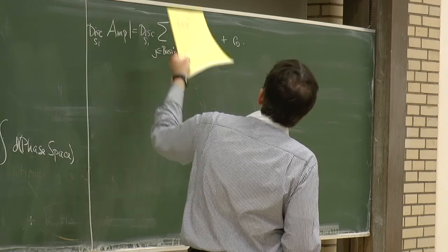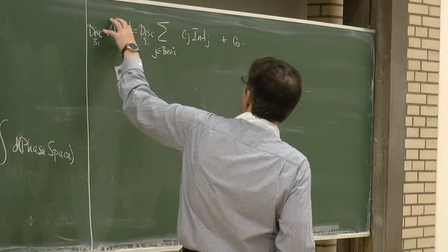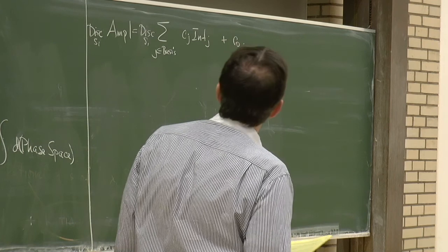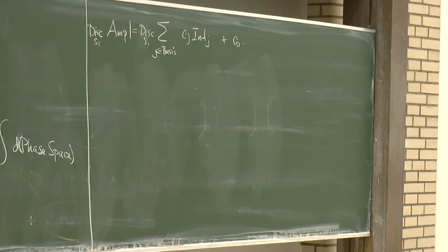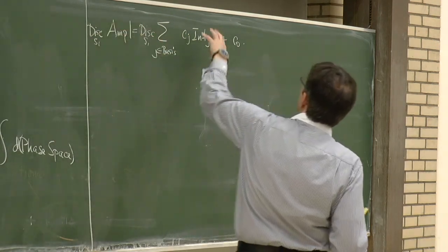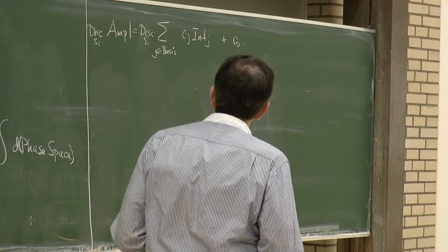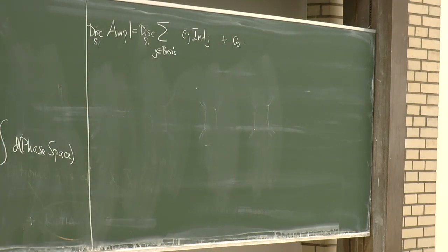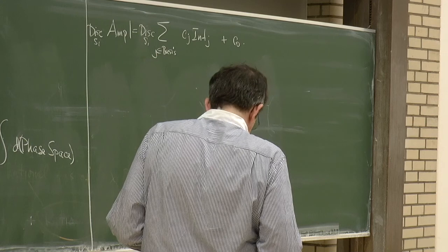Can one isolate each coefficient individually, pre-diagonalizing the system? We can, and that's generalized unitarity. But before launching into that, for the benefit of those who haven't seen dilogarithms before: at one loop, the functions with discontinuities that you need are logarithms and dilogarithms. At two loops or higher there's a much larger menagerie of functions, which you'll learn about in Professor Durer's lecture.